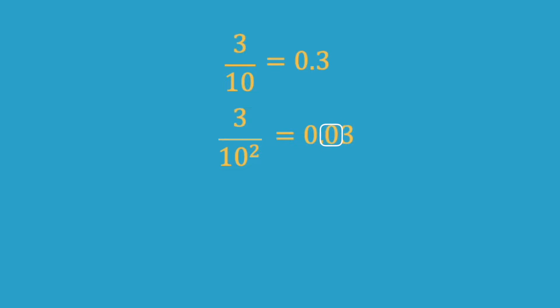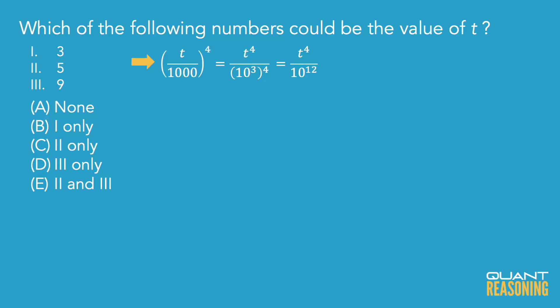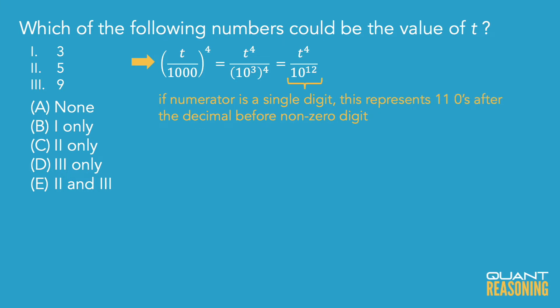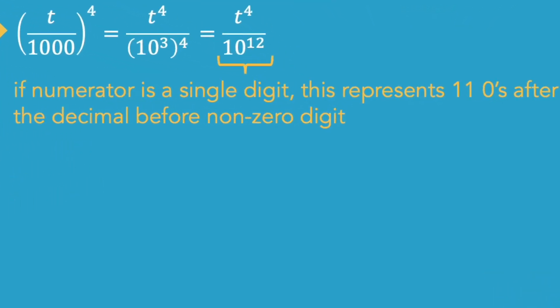We can keep going and see that there is a pattern. If it was 3 over 10 cubed, or 3 over 1,000, that would be 0.003 — two zeros. So it's always one fewer zero than the exponent on the 10 in the denominator. So if it was a single digit in the numerator with 10 to the power of 12, you'd have exactly 11 zeros between the decimal point and the first non-zero digit.